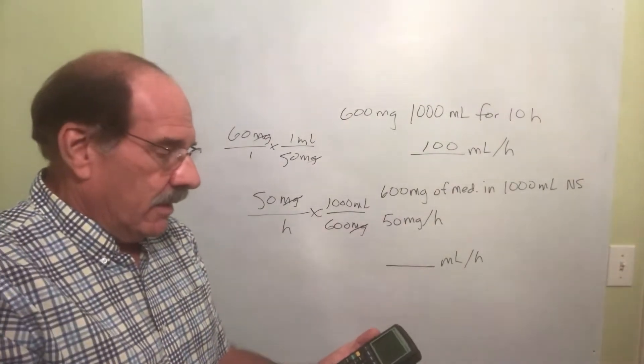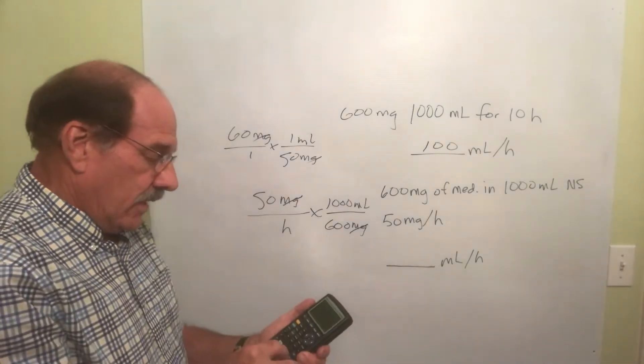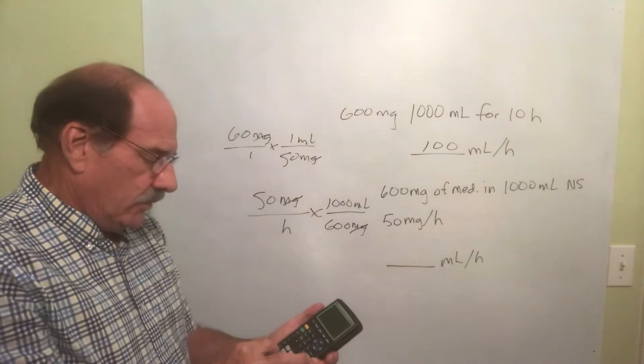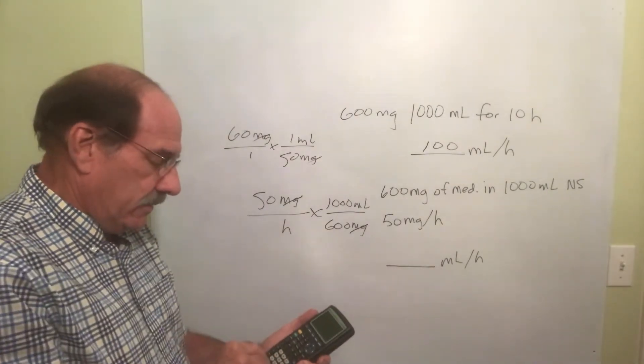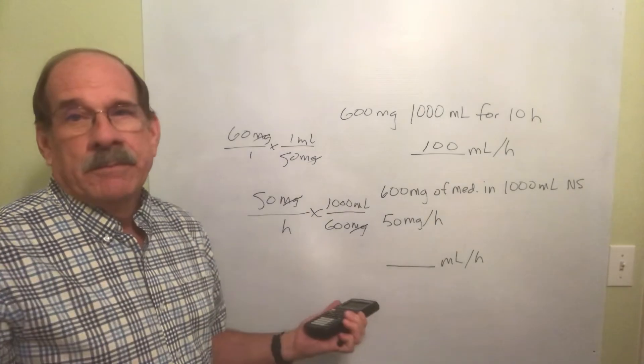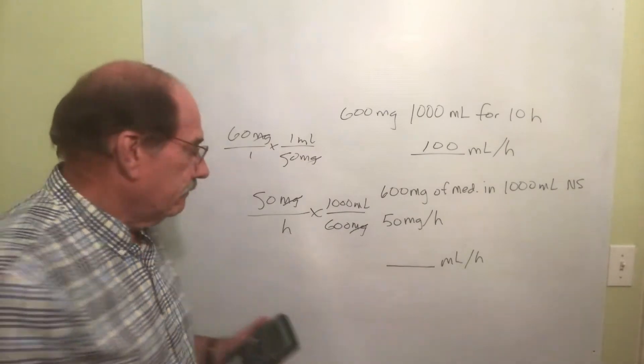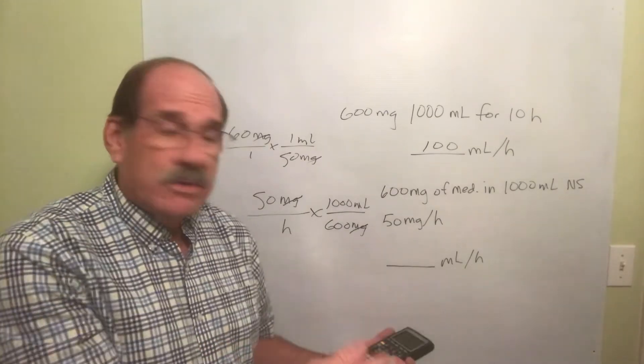I could do that, in fact I'm going to do that now and show you an option here in a second. But if I take 50 times 1000 then divided by 600, the answer is 83.3333. What's the answer? 83. Round it off to the nearest whole number. With IVs, nearest whole number.